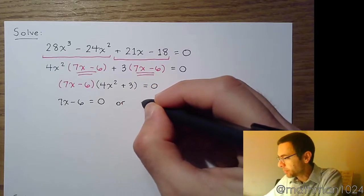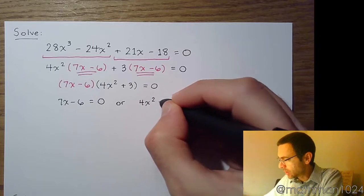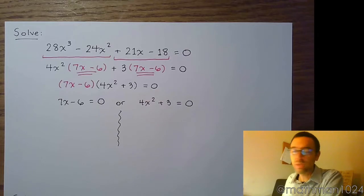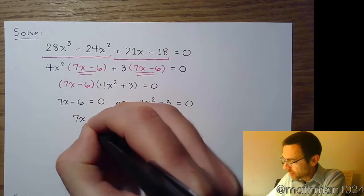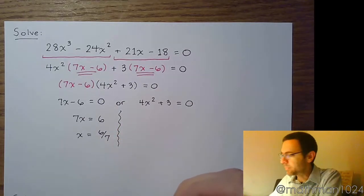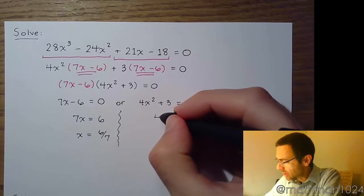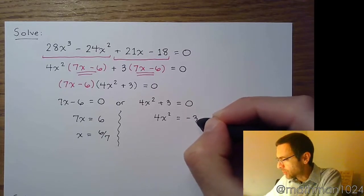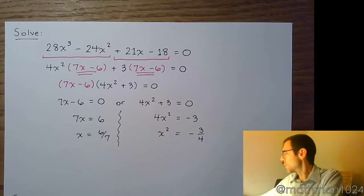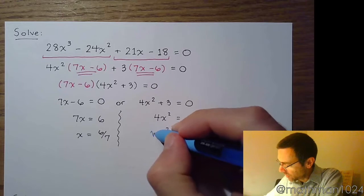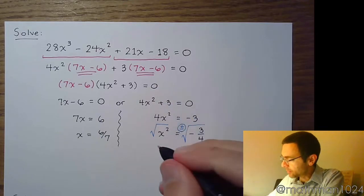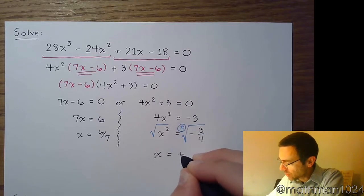We take each factor and set it equal to zero: 7x minus 6 equals zero, or 4x squared plus 3 equals zero. Solving 7x minus 6 equals zero gives 7x equals 6, so x equals 6 over 7. For 4x squared plus 3 equals zero, we need to isolate x squared. Subtract 3 and divide both sides by 4 to get x squared equals negative 3 fourths. To undo the square, we use the square root property — take the square root of both sides, don't forget the plus or minus.